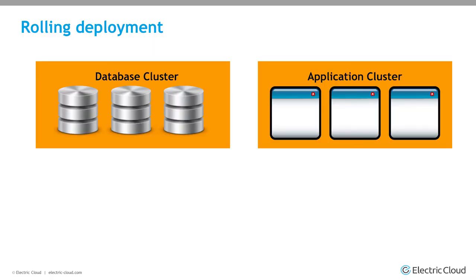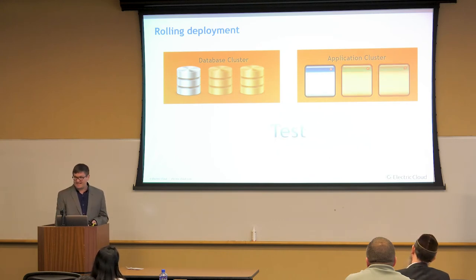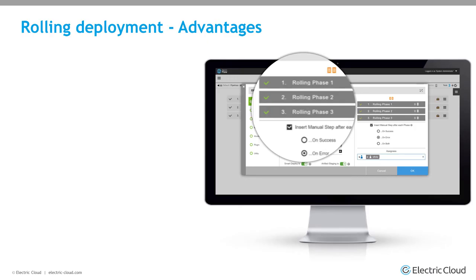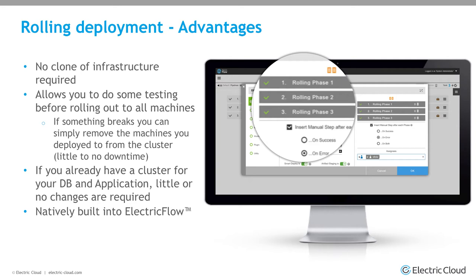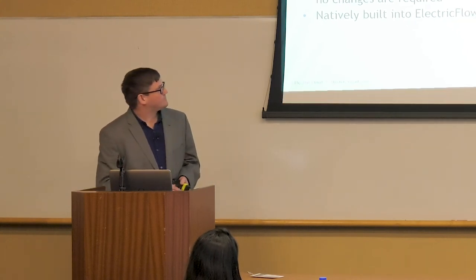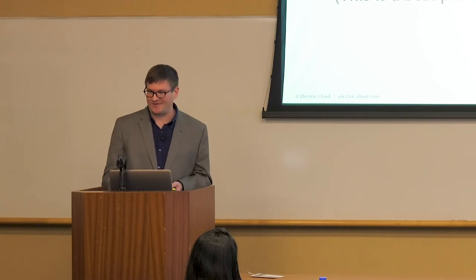There's also the rolling deployment strategy. You have your three nodes, you deploy to one of them but don't take it out — you deploy to the one application, test it, and once tested you deploy to the others. I think this is one of the smartest ways and what I'd recommend if you can do it. You don't have to have an entire cloned infrastructure, and if something breaks you just remove that machine from your load balancer. Disadvantages: you can get version mismatches, and you need a clustered environment — though you should have one anyway.